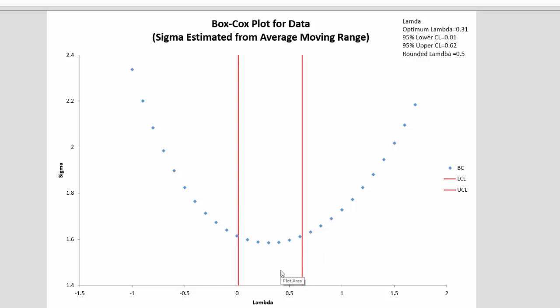But since there's variation in the process, it's not an exact number. So there's going to be a range of lambda values to consider, and we use a 95% confidence limit to define that range, and that's these red lines here. That means the value of lambda can really occur anywhere within here.